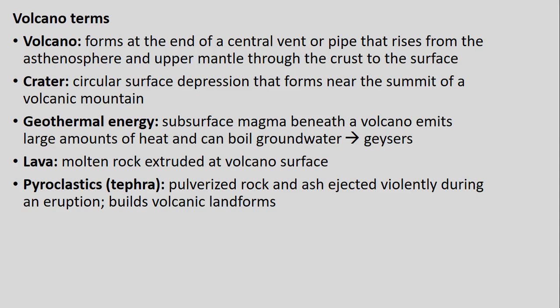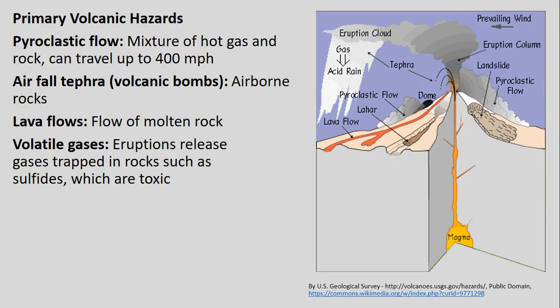Just to give us some basics — you can read through this on your own in the slides — but particularly when we're talking about hazards tied to volcanoes. Often when we're interested in volcanoes, the topic of discussion turns to the various hazards associated with them: things like pyroclastic flow, airfall tephra, volcanic bombs — basically airborne rocks ejected out of volcanoes — lava flows, and other volatile gases that would be quite toxic to breathe if exposed to them.